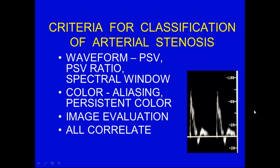There's a normal velocity range — we'll get into the velocity ranges that are accepted when people are starting to look at the vessels. The criteria for classification of arterial stenosis includes the waveform, peak systolic velocity, and peak systolic velocity ratio. You want to see the window to see whether it fills in. You want to look for color flow aliasing and persistent color. With a triphasic waveform it should be color, no color, and if you see color throughout, even if your eye did not pick up aliasing, that's an area of stenosis. All of these parameters must correlate.